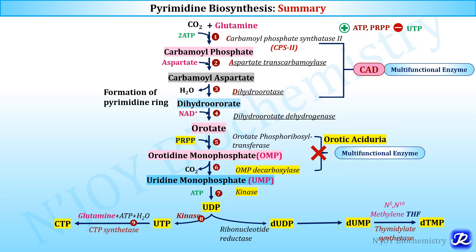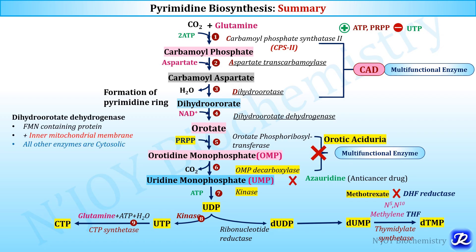Defects in orotate phosphoribosyl transferase or OMP decarboxylase cause orotic aciduria. Methotrexate inhibits dihydrofolate reductase, ultimately inhibiting thymidylate synthetase and DNA synthesis. 6-Azauridine inhibits OMP decarboxylase. 5-Fluorouracil competitively inhibits thymidylate synthetase. Notably, dihydroorotate dehydrogenase is an FMN-containing protein located in the inner mitochondrial membrane — the only enzyme of this pathway not in the cytosol.